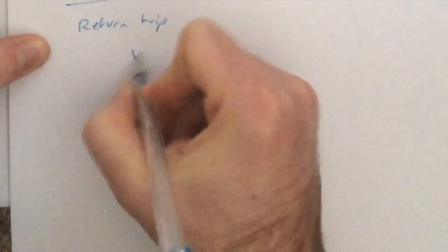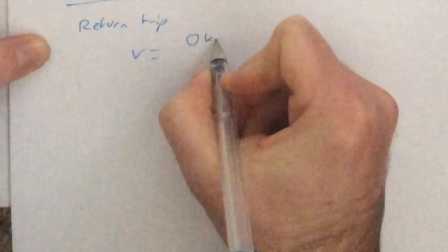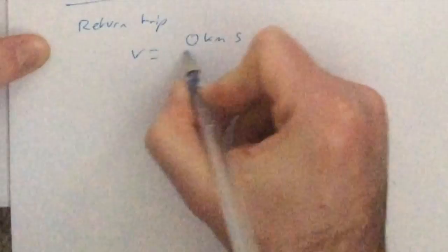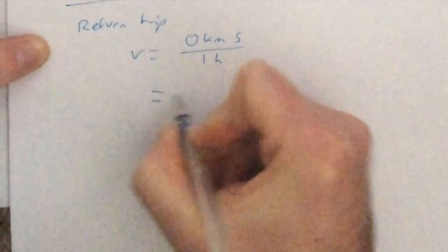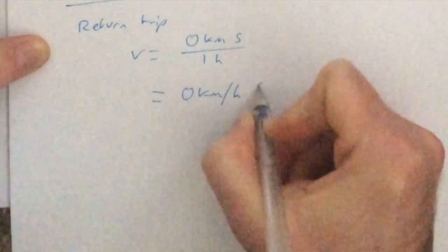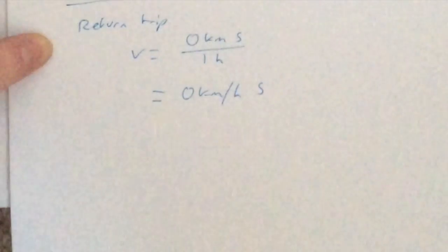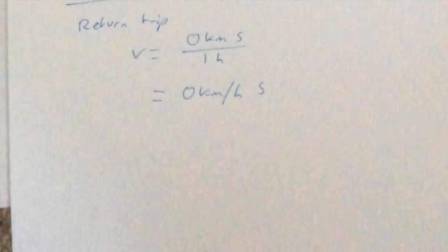So what will happen on a round trip? As we saw earlier, if I return to my starting point, my displacement becomes zero. And so if it takes me one hour to drive to school and back, my velocity will become zero kilometres per hour south.